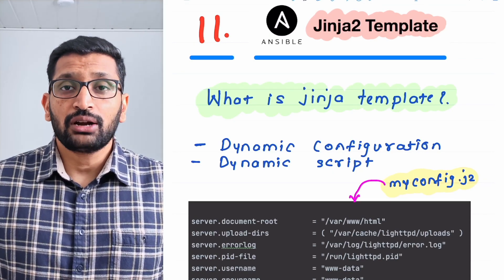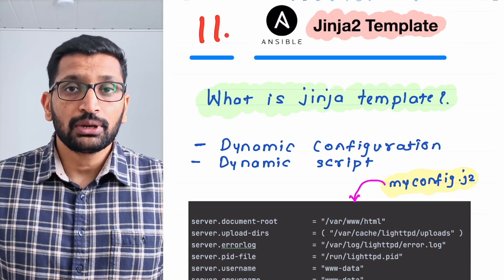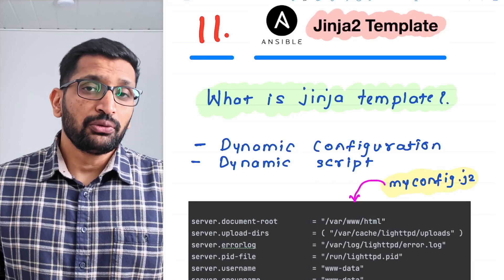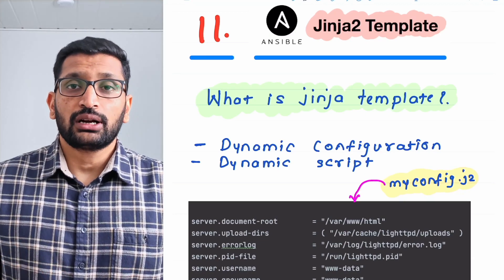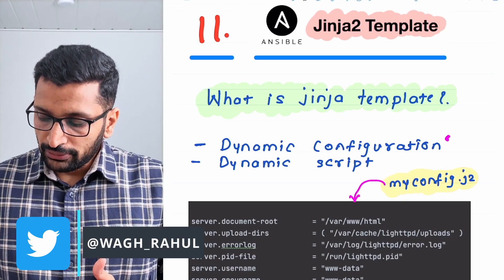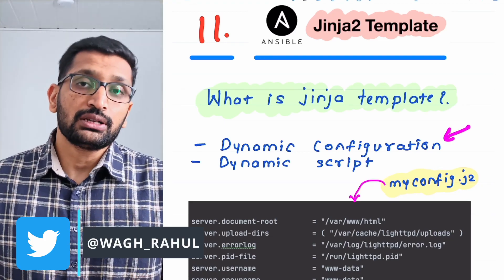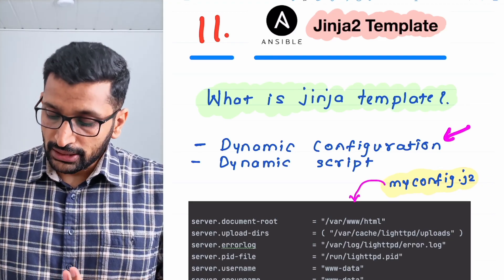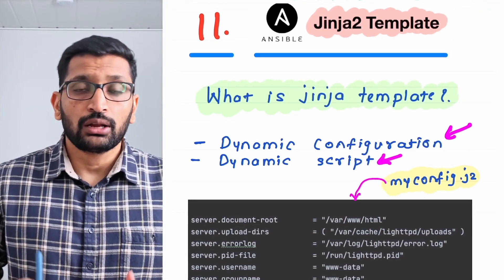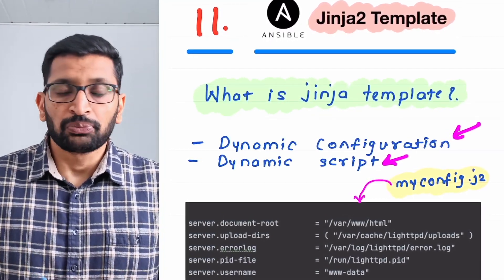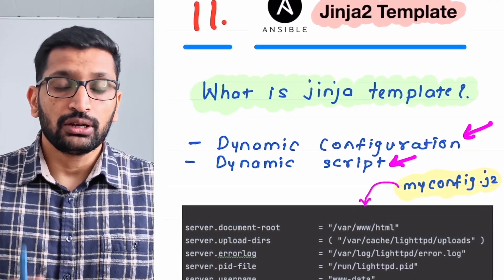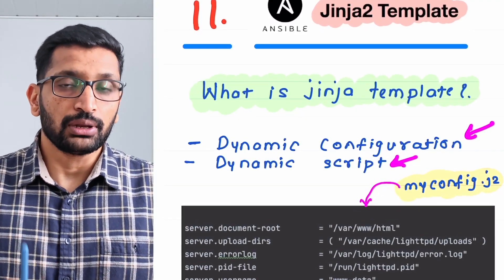The objective of this session is to understand what is a Jinja2 template in Ansible and how to use the Jinja2 template for your Ansible playbooks. Before we jump to the demo, let's try to understand what a Jinja2 template is. I have listed two benefits: the first one is dynamic configuration and the second one is the dynamic script. The next example is going to explain the Jinja2 template in a very simple manner.